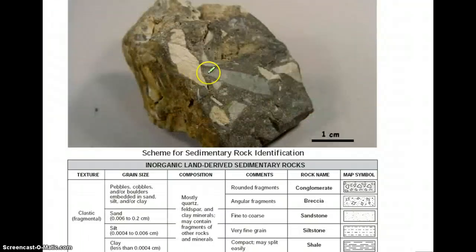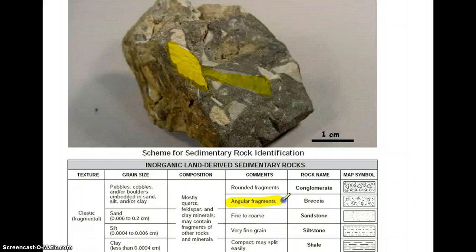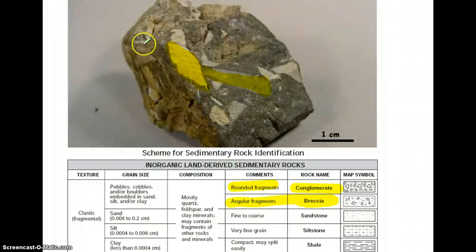Now if there are large pieces that are not rounded, but are sharp and angular with jagged edges, then that rock is called a breccia. To summarize: conglomerates have rounded fragments, and breccias have angular fragments.